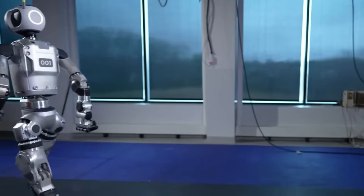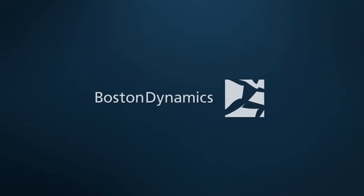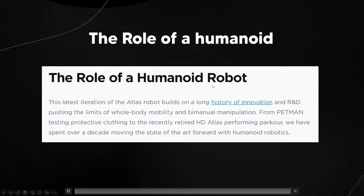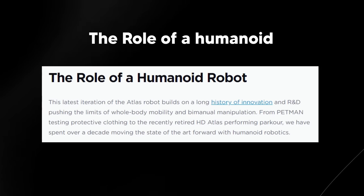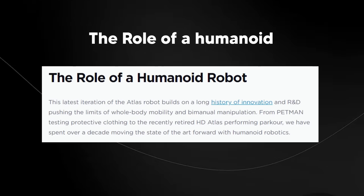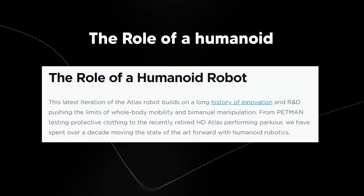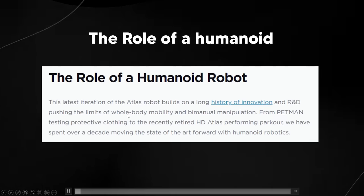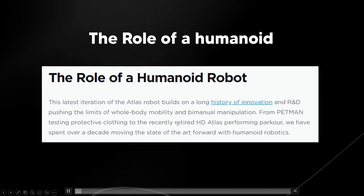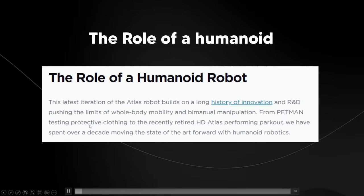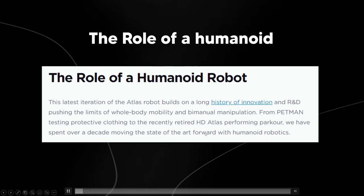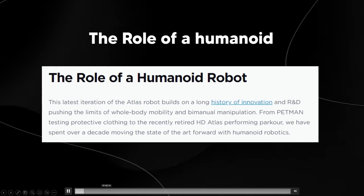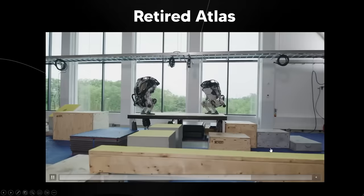They also included some pieces of information with this robot. With the blog post and the video, they said that this is the latest iteration of the Atlas robot that builds on a long history of innovation and research and design, pushing the limits of whole body mobility and bimanual manipulation. From Petman testing protective clothing to the recently retired HD Atlas performing parkour, we've spent over a decade moving the state of the art forward with humanoid robotics.